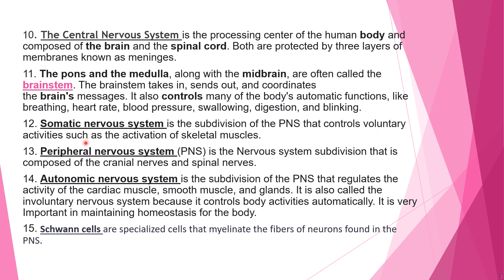Number twelve: the somatic nervous system is the subdivision of the PNS, or peripheral nervous system, that controls voluntary activity such as the activation of skeletal muscles. So if a test question asks how the somatic nervous system is associated with voluntary activities, skeletal muscles would be the correct answer.